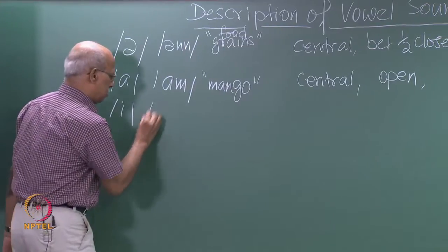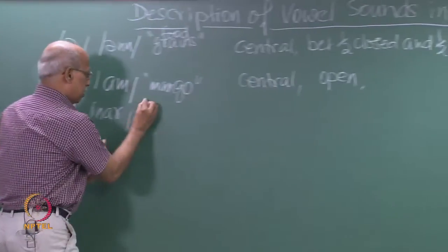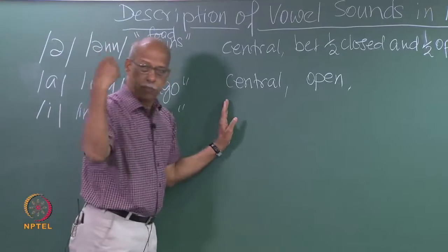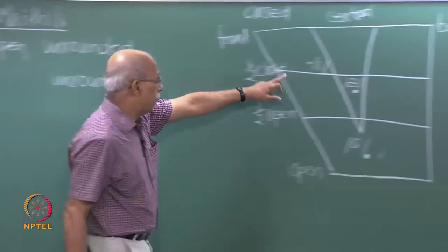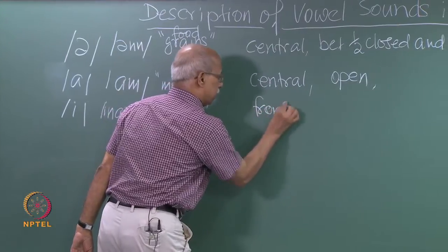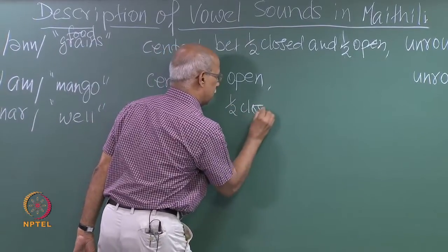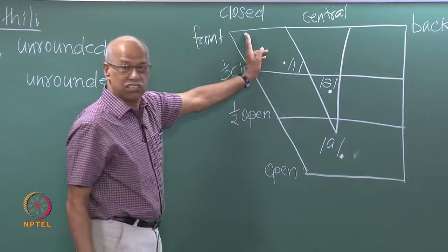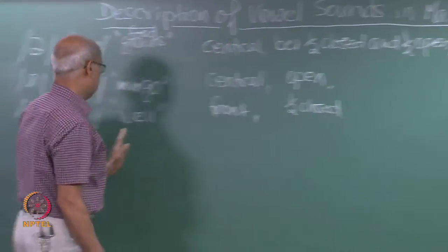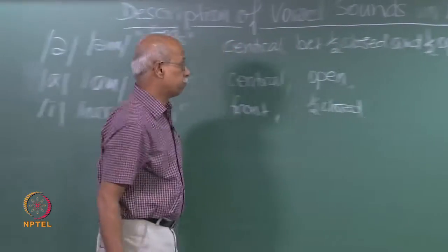Let us look at the next. The symbol is 'e'. Do not put a length marker. How shall we describe it? Front or back? Front. Open or closed? Half closed, because it is somewhere near that position. Front, half closed. Rounded or unrounded? Unrounded.